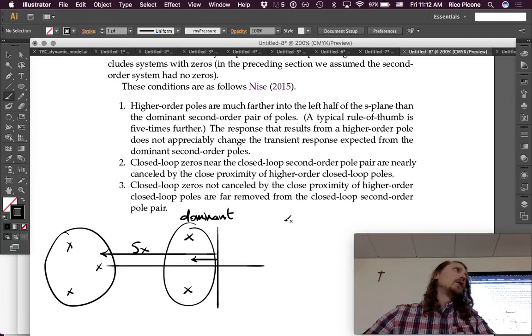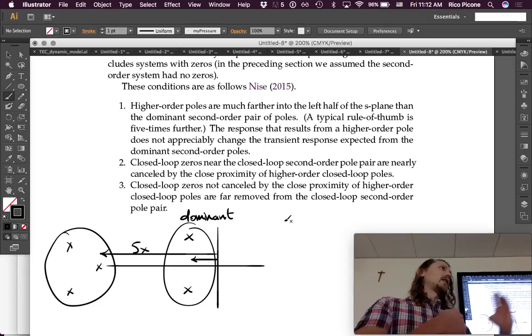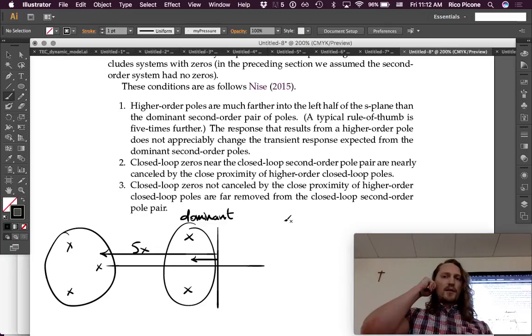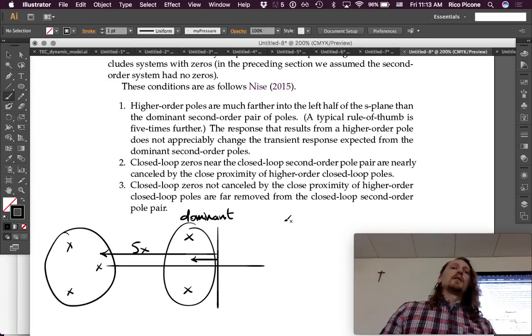and it might not be very valid. We can check it later. So, if you want to know if your approximation is valid, then you can check to make sure that the other poles are further out. That's one of the things you can do.